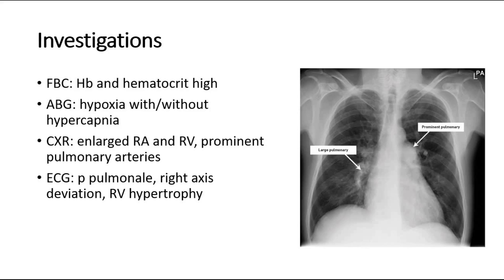For ECG, you can look for P pulmonale, right axis deviation, and also right ventricular hypertrophy signs. These are the classic signs that can be seen in cor pulmonale.